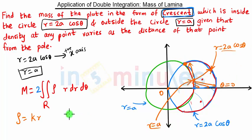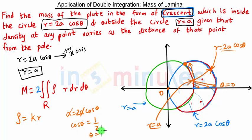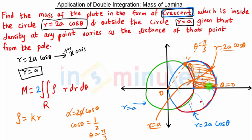We will move this ray from theta equal to 0 until we reach the intersection point of the two circles. Equating the two equations: a equal to 2a cos theta, so a cancels and we get cos theta equal to one half. This gives theta equal to pi by 3. So at the intersection point theta is pi by 3. We move this ray from theta equal to 0 to theta equal to pi by 3 to cover the region. After finding the mass of this region we multiply by 2 so the entire crescent region is covered.